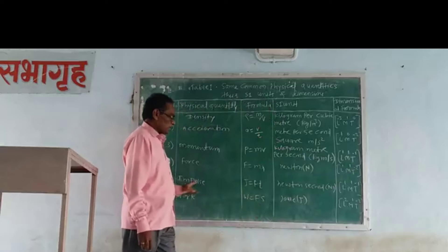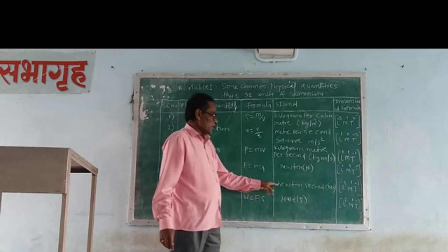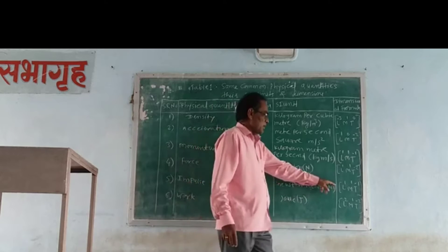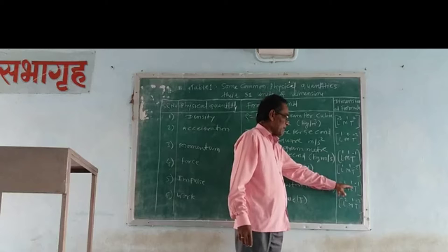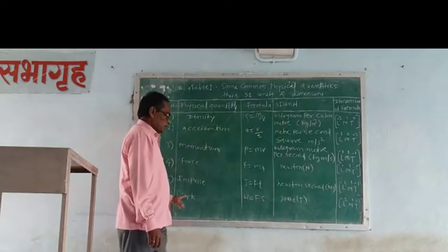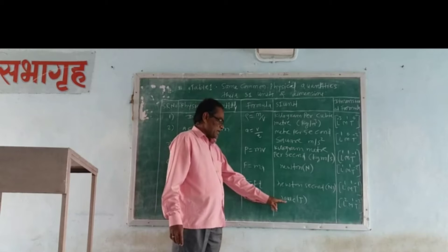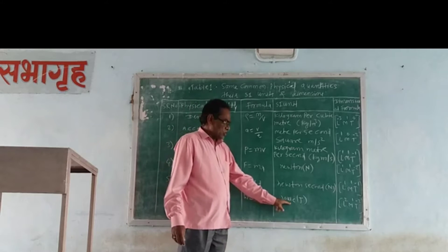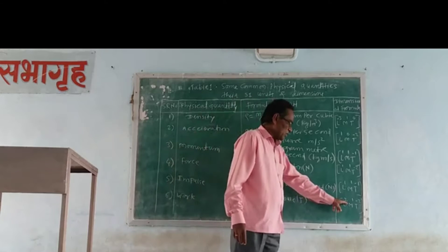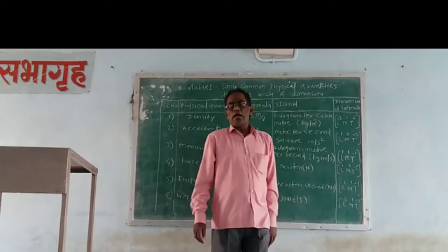Impulse. J is equal to force into time. The unit is Newton second, and the dimensions are L1 M1 T minus 1. Work: F equal to force into displacement. The unit is Joule, and the dimensions are L2 M1 T minus 2.